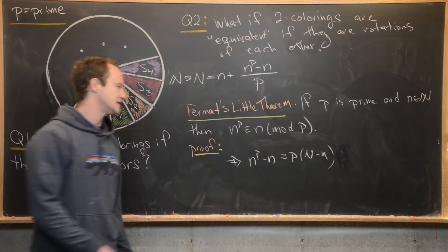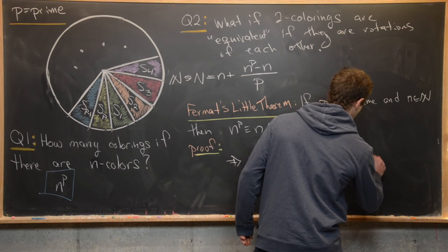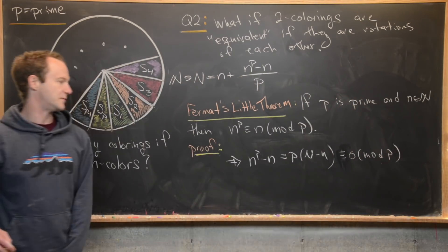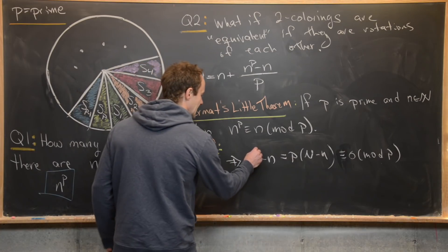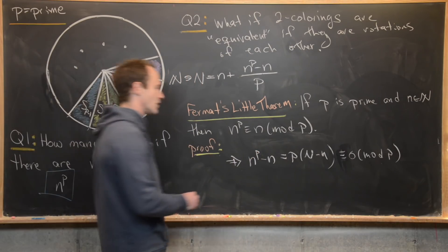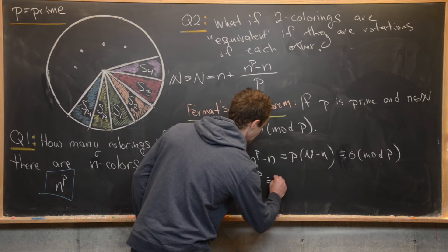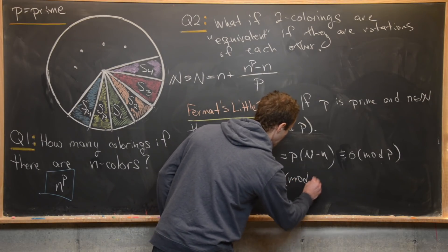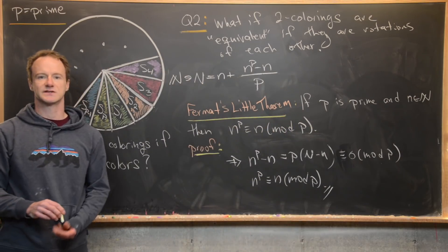Reducing mod P, we see that N to the P minus N is congruent to zero mod P, since it's a multiple of P. And saying N to the P minus N is congruent to zero mod P is equivalent to saying N to the P is congruent to N mod P. And that's a good place to stop.